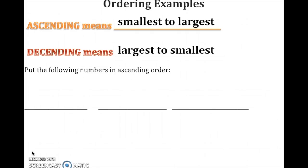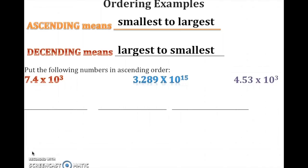Let's put the following numbers in ascending order: 7.4 times 10 to the 3rd, 3.289 times 10 to the 15th, and 4.53 times 10 to the 3rd. Two exponents are the same (10 to the 3rd), so compare the decimals — think of money: $7.40 versus $4.53. Ascending means smallest to largest, so the order is: 4.53×10³, 7.4×10³, and 3.289×10¹⁵.